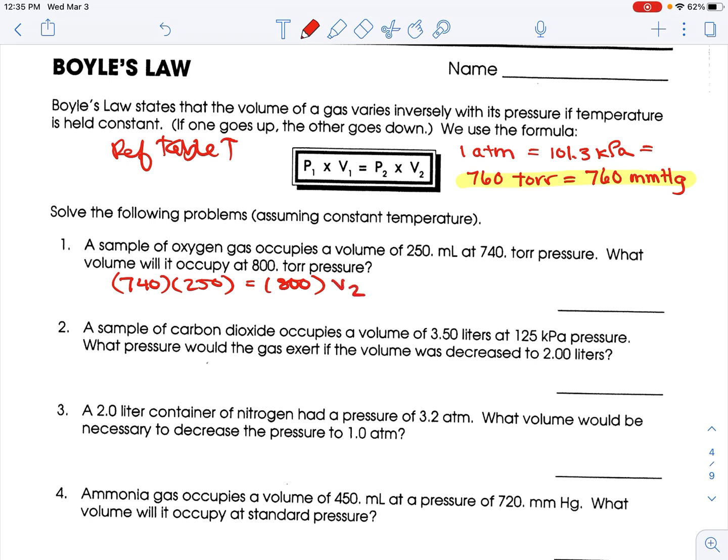So now, let's just do some math. 740 times 250 is 185,000 equals 800 times V2. Divide both sides by 800, and you get 231.25. So, we're going to look at sig figs. I got three here, three here, three here, so we need three sig figs, 231 milliliters.